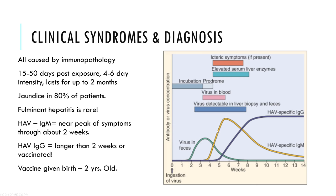IgM is the first antibody produced, then we class switch with CD4 help to IgG. So eventually IgG will come up. If the patient only has HAV-IgG, you want to see if they were vaccinated, because it could just be vaccination. If you're testing for hepatitis A, you probably tested for B, C, and D as well, and you can ask about vaccination history. HAV-specific IgG means they've either been exposed more than two to three weeks ago, or they were vaccinated — those are your only options.